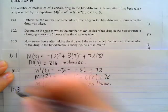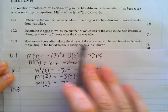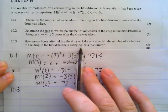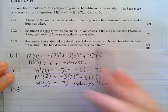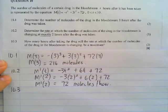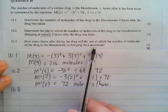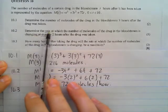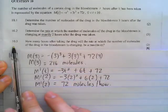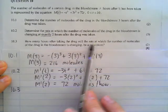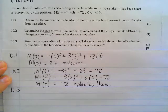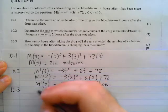How many hours after taking the drug will the rate at which the number of molecules of the drug in the bloodstream is changing be a maximum? Important question here. If we're working out the maximum rate of change, remember number 2 worked out what is the rate at a certain value. Number 3, what is the maximum rate of change? So we're not asking for a certain hour, we're working out the hour.